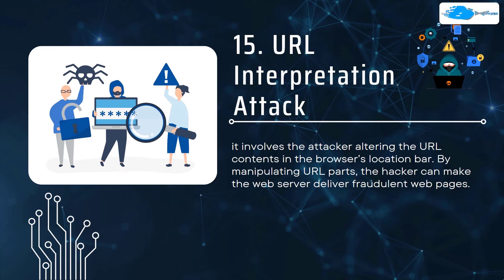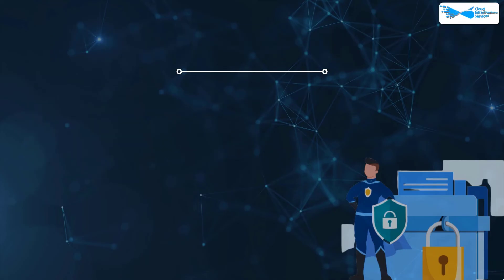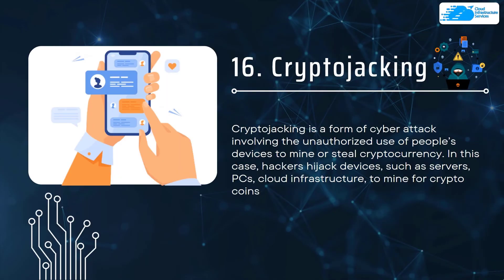Number fifteen is URL interpretation attack. This involves the attacker altering URL content in the browser's location bar — by manipulating parts of the URL, the hacker can make the web server deliver fraudulent web pages. To prevent this, use a web application firewall and an automated website scanner to detect and remove any active infections on your website.